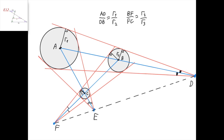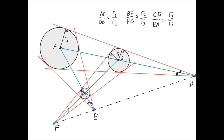Similarly, we can apply the intercept theorem for this triangle here, where since this angle is 90 degrees and this angle here is 90 degrees at the tangent point, then this line and this line are parallel. And therefore, BF divided by FC equals R2 divided by R3. And similarly, we get that CE divided by EA equals R3 divided by R1. Hence, we get these three equalities. Now we can multiply these equalities so that R3, R1, and R2 all cancel out.